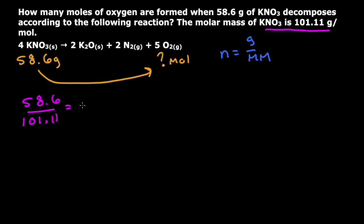And when I do that, I'm going to get 0.579. And that will be moles of this KNO₃. And so now that I know the moles of this KNO₃, I have to go to this moles of oxygen.